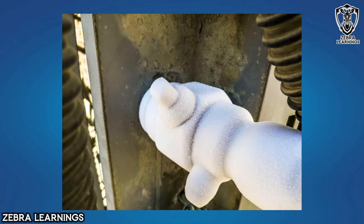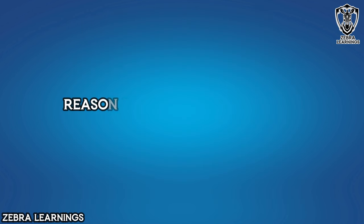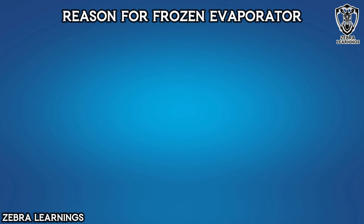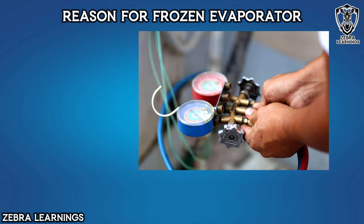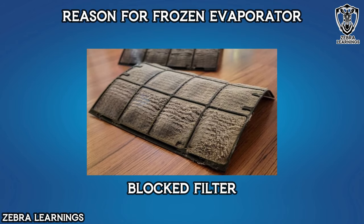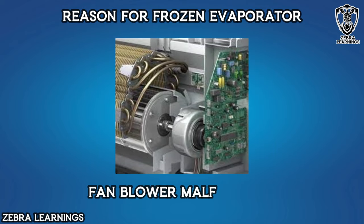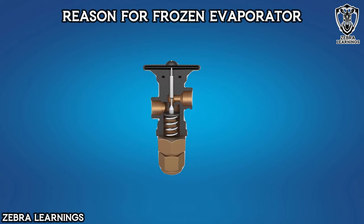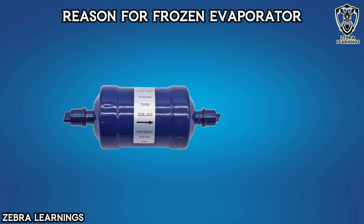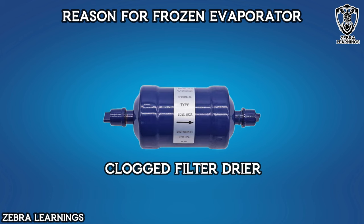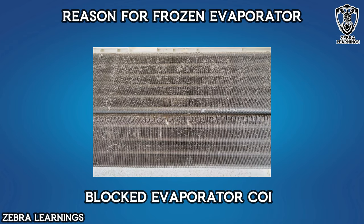Sometimes the suction line is frozen all the way to the compressor. Let's look at the reasons for this one by one. The first important reason is low refrigerant, or this problem may occur because the entire filter is blocked. The blower fan in the indoor unit may not work. The thermal expansion valve may not be working properly. It could also be a filter dryer or evaporator coil block. These are all causes of evaporator coil freezing.